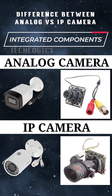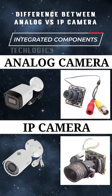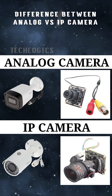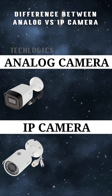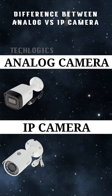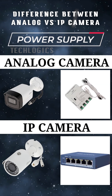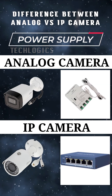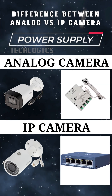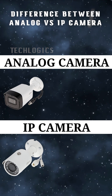IP cameras convert the video signal into a digital format and transmit it over a network cable, Ethernet, or Wi-Fi. This allows for a single cable to carry both power and video data, simplifying installation. Additionally, IP cameras tend to be more compact due to the absence of bulky analog conversion components.